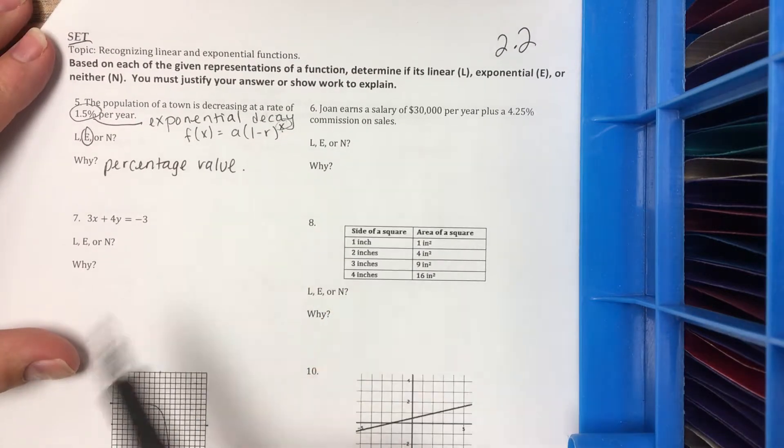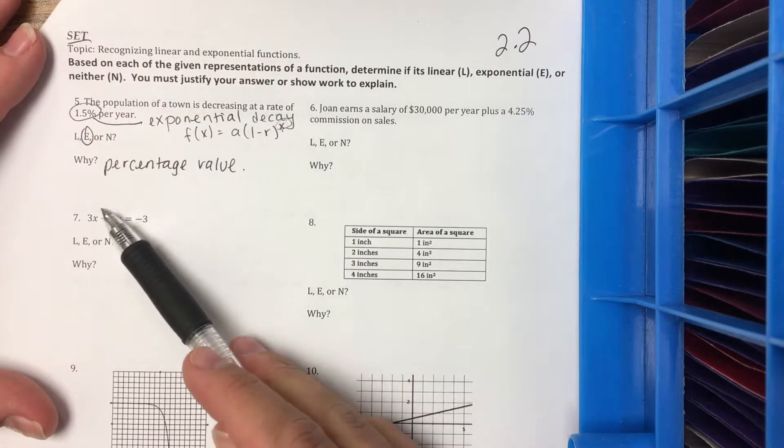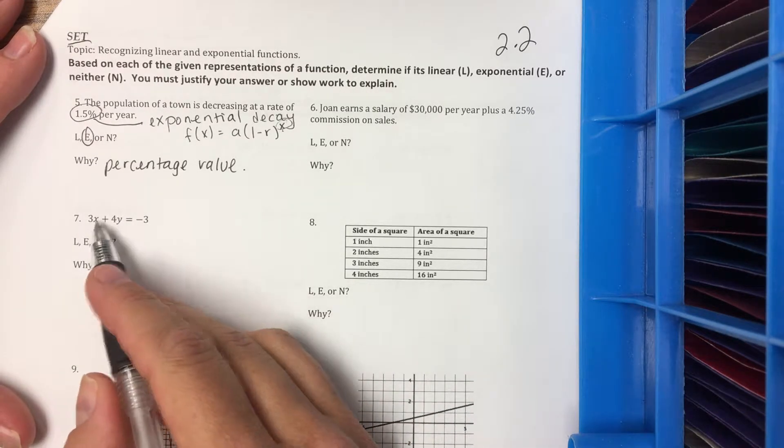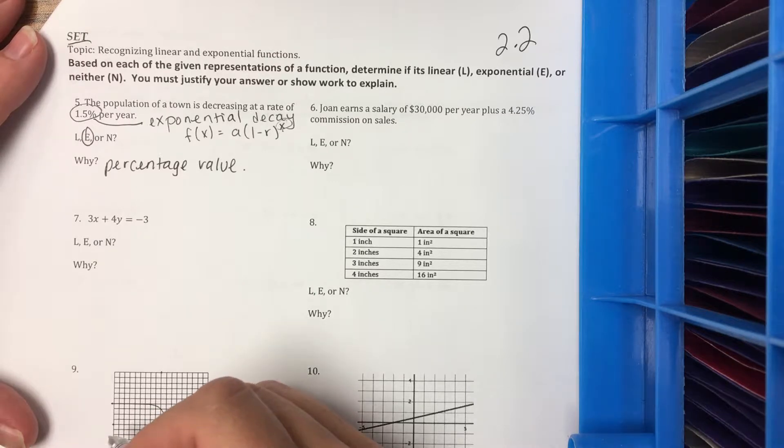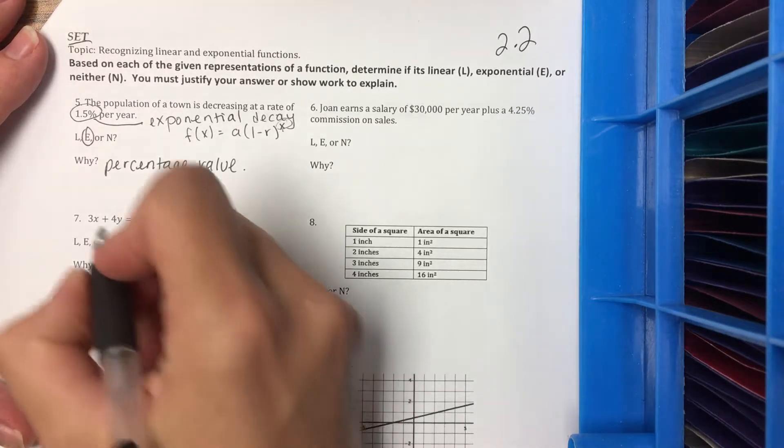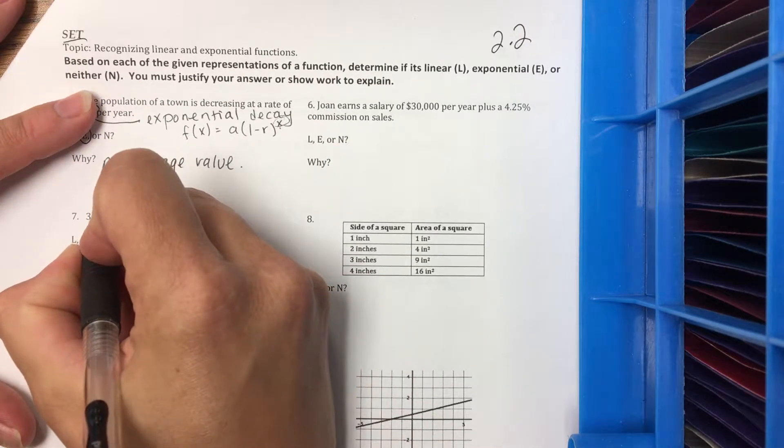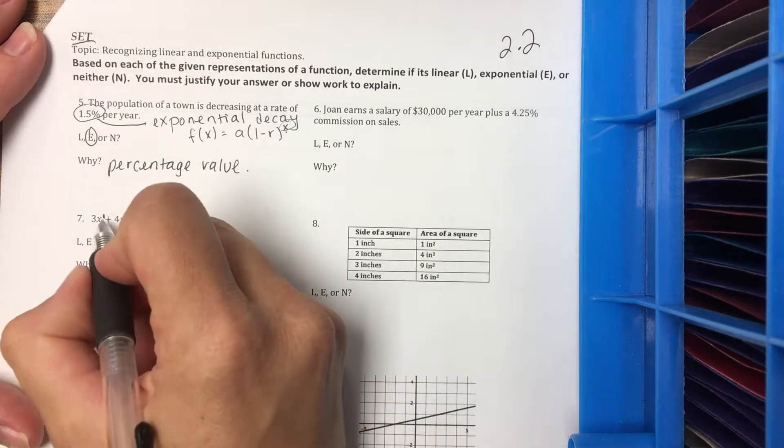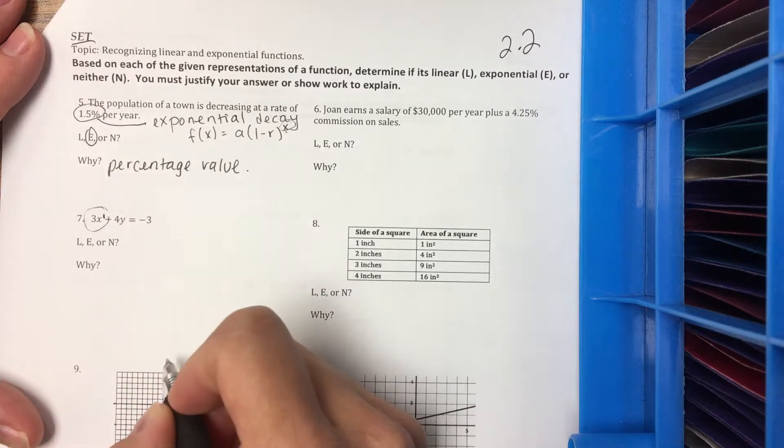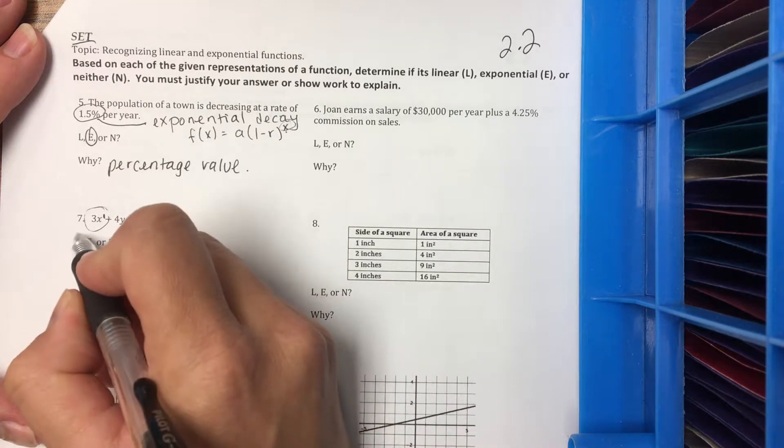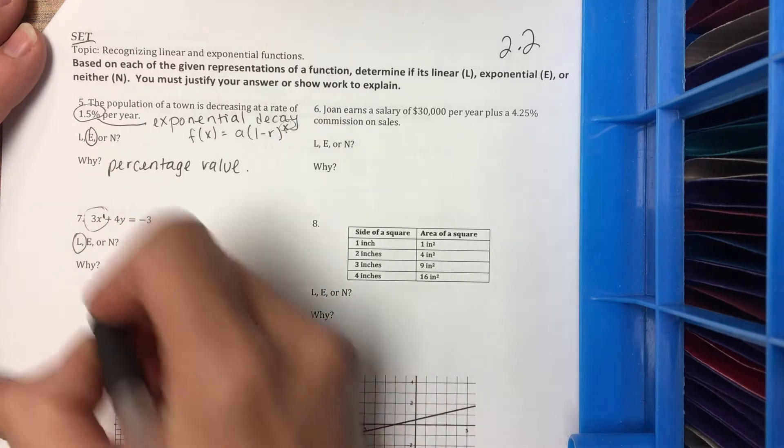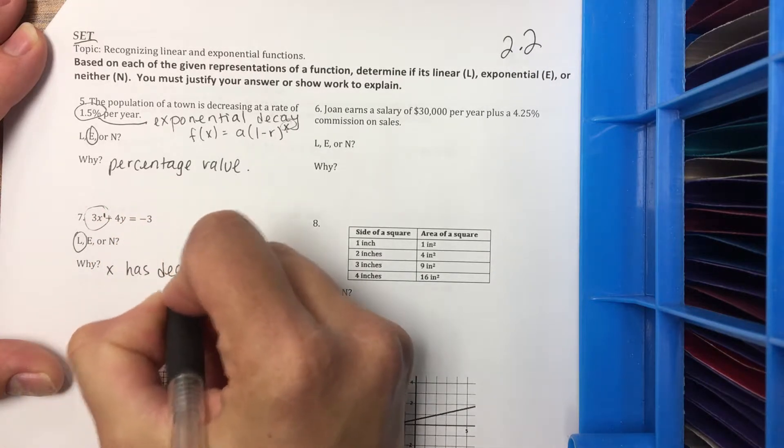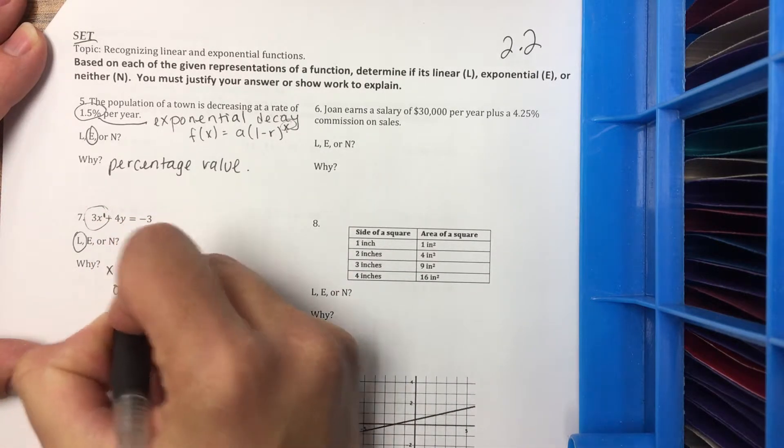So 6, same thing. Let's skip to 7. Linear, exponential, or neither. One of our rules of linear is that the x value has a degree of 1. So there's an invisible 1 right there on the 3x. Because of that, it's linear. So x has a degree of 1.